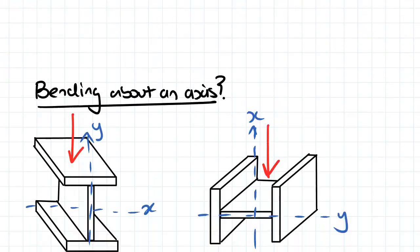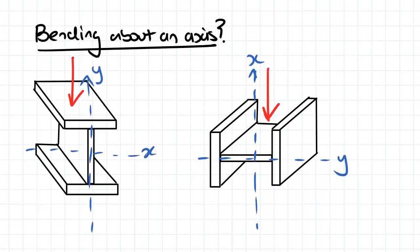So let's first look at bending about an axis. If we have a load applied to an I beam here, we've taken a cut out of it there, that would cause a deflection in this plane here. And you can see using the right-hand rule that would cause rotation about the x-axis. So we call this type of bending x-axis bending.